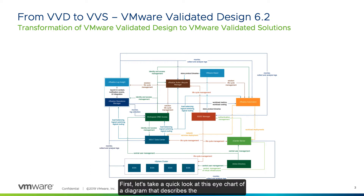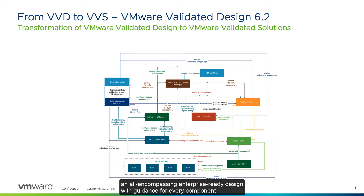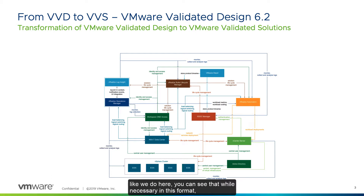First, let's take a quick look at this eye chart of a diagram that describes the VVD 6.2 architecture. As you can see, there are a number of discrete components here, all of which are interdependent to one degree or another. This is a big and complex system by design. The intent was to deliver an all-encompassing enterprise-ready design with guidance for every component involved. When you take a step back and look at it from the 10,000-foot view, you can see that while necessary in this format, this is quite unwieldy in practice.